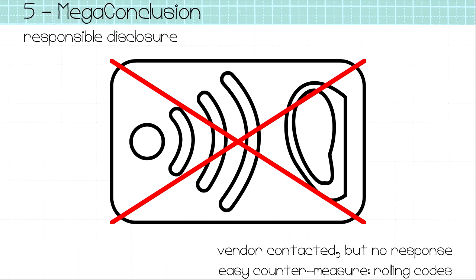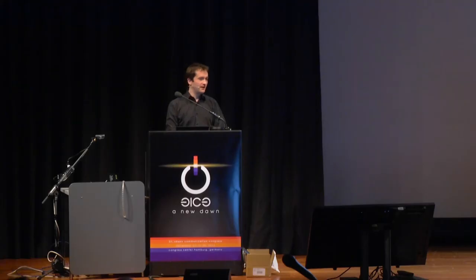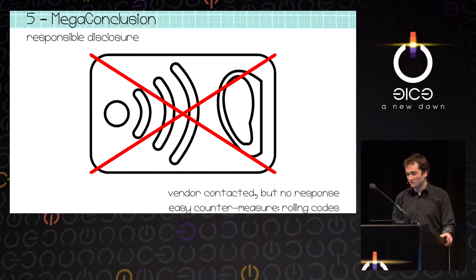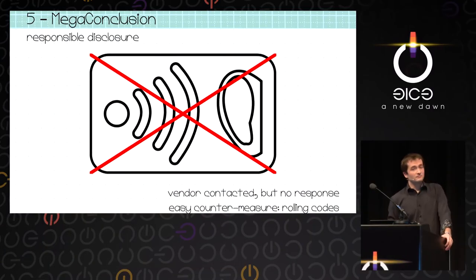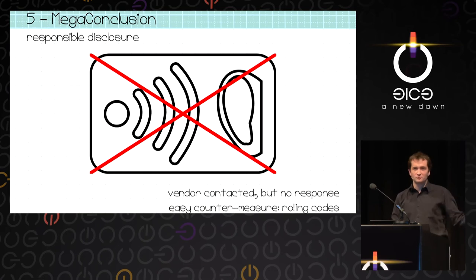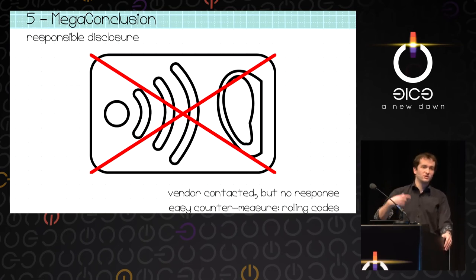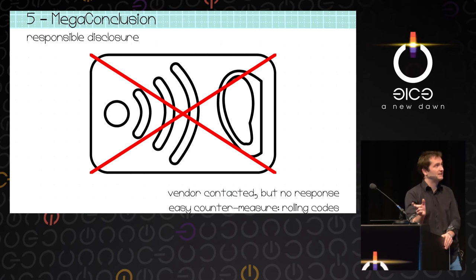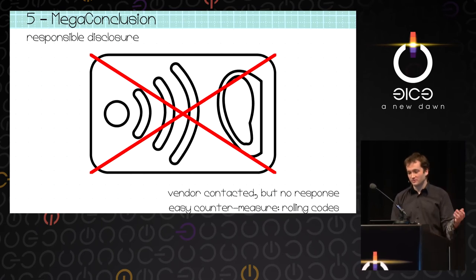Because we're not evil hackers, we told the vendor — and as always, the vendor just doesn't care, even though they provide security products. I also show this talk because the solution is quite easy: rolling codes, where the code changes every time but you have a fixed seed. If you do such a system, you should use rolling codes. It's their fault if they don't.